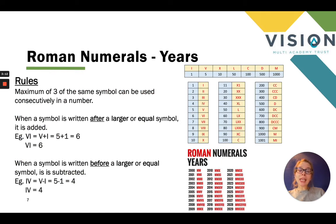So looking at Roman numerals. In year five, children will be expected to work out Roman numerals in terms of years. This is obviously a lot bigger than the numbers that we were working on in year four, but the same three rules still apply. There's a maximum of three of the same symbol can be used consecutively. If a symbol is written after a larger or equal symbol, it's added. If a symbol is written before a larger or equal symbol, it is subtracted.